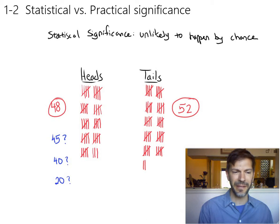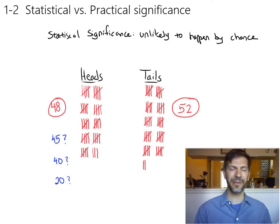But where's this point where you start thinking something funny is going on? Is it at 45 heads? Is it maybe at 40 heads? Maybe 35? Where do you stop saying I don't think the coin's fair anymore?